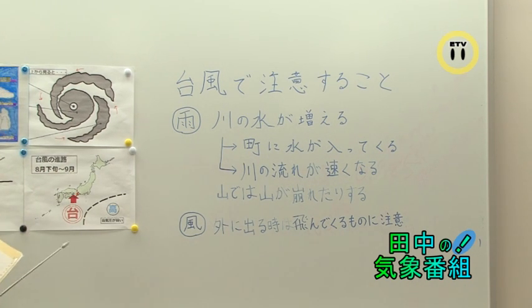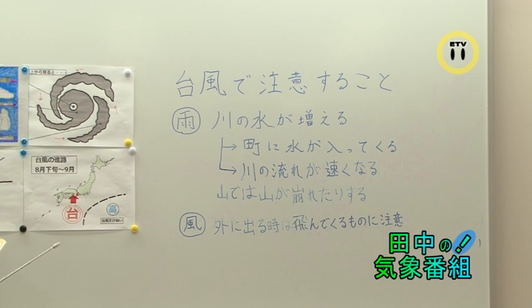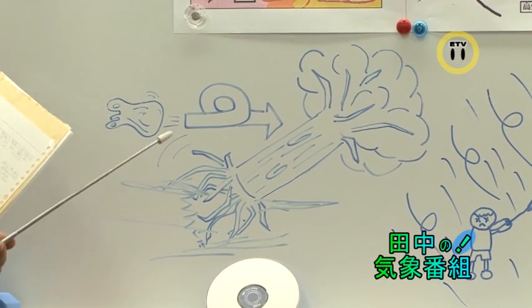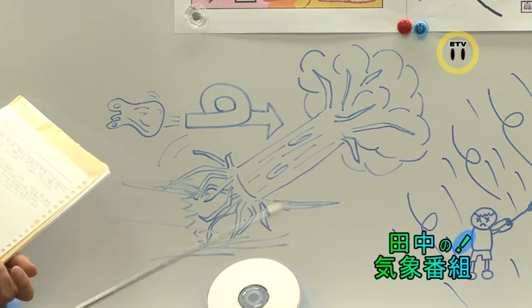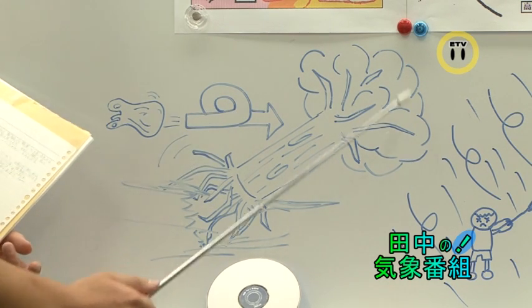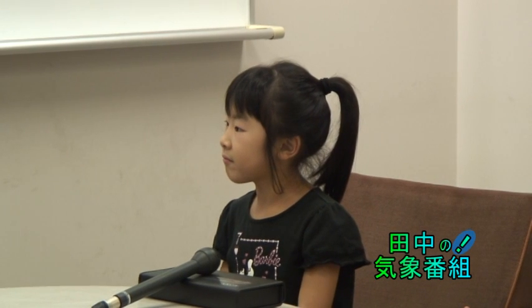なので、台風が来たときは絶対に水が多くなった川には近づかないようにするということが大事です。次に、台風といえば強い風を吹かせます。強い風で傘が飛ばされてしまうこともあります。強い風が吹くと家の周りにある木が倒されたり、傘が飛ばされてしまったりして、とても危ないです。